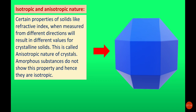We can discuss what is isotropic and anisotropic nature. Certain properties of solids, like refractive index, when measured from different directions, will result in different values for crystalline solids. This is called the anisotropic nature of crystals. Amorphous substances do not show this property — for all directions the physical property is the same — and hence they are isotropic.